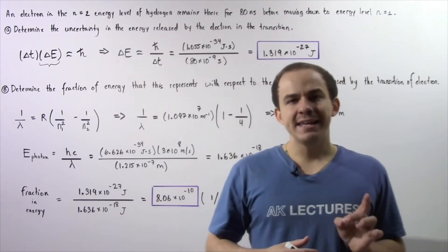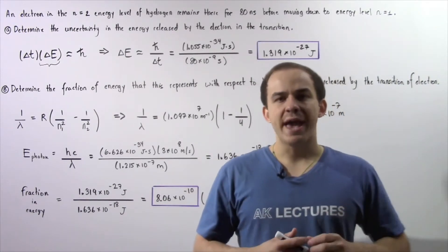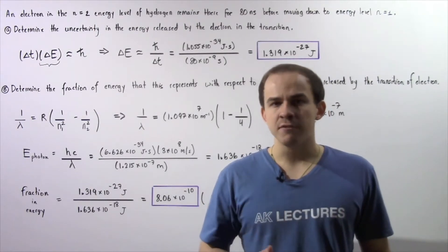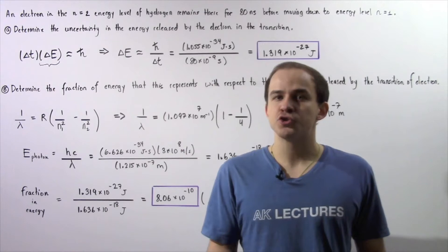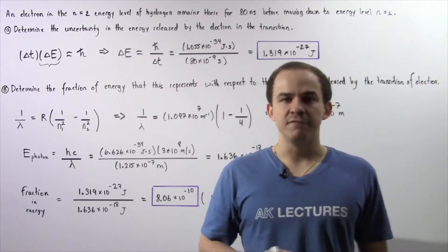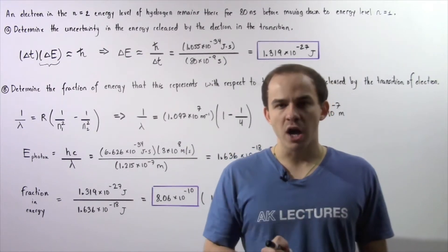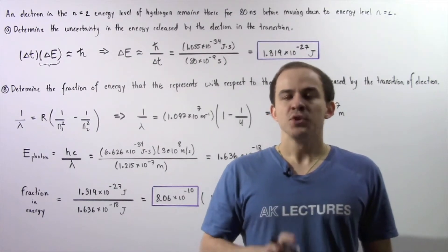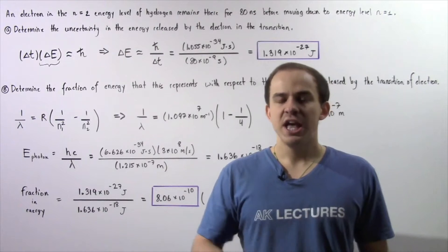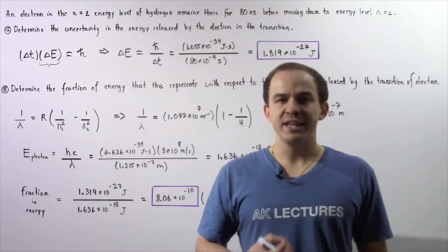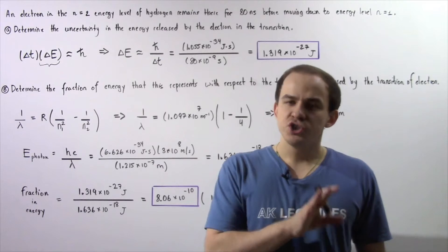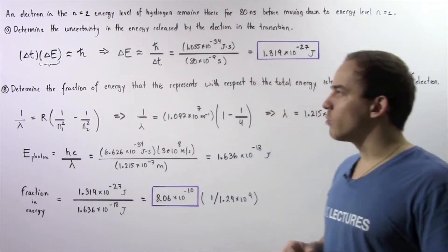An electron in the n equals 2 energy level of the hydrogen atom remains in that level for 80 nanoseconds before transitioning to a lower energy level given by n equals 1. In part A, we want to determine the uncertainty in the energy that is released when that electron jumps from n equals 2 to n equals 1.